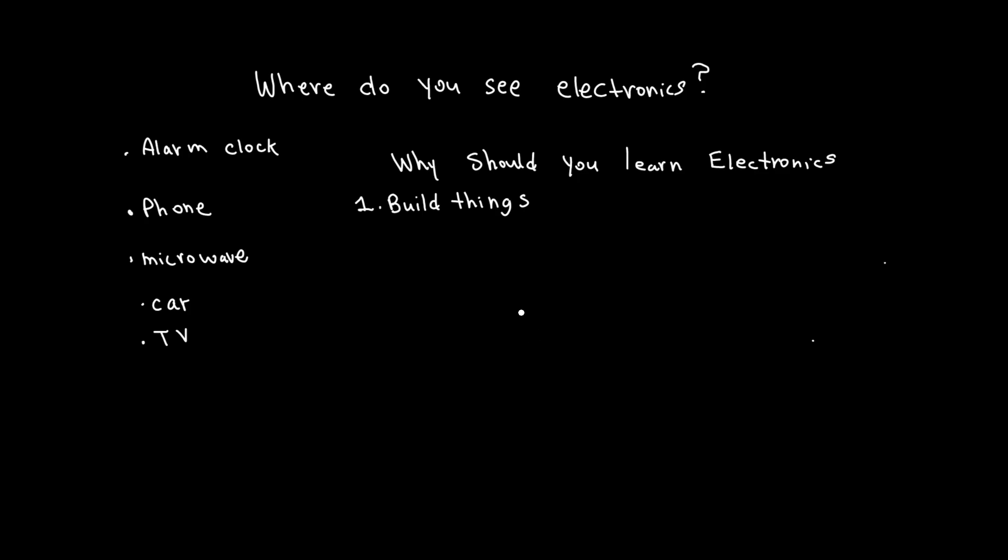The first one is build things. If you want to make your own robot, a sound sensor, an LED light show, it all starts with basic electronics. Number two: fix things. Understanding electronics means you can diagnose and repair broken gadgets—no more throwing stuff away. The third reason, and one I really like, is that you save money. Imagine changing a tiny component instead of replacing a whole device.